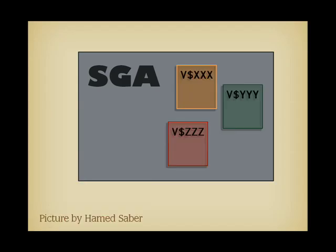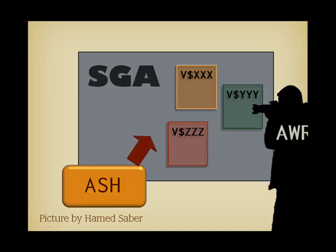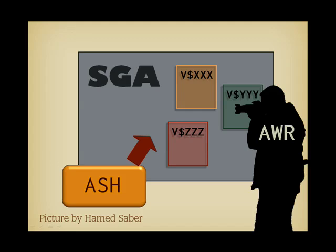With version 10, Oracle shipped an improved statspack in an offering called Performance Pack. The two major components are a new monitor called ASH for Active Session History, and a revamped statspack called AWR for Automatic Workload Repository. By default, ASH probes memory every second and only checks active sessions. Data is saved to a memory buffer and dumped to the database only once in a while. In the meantime, AWR takes statspack-style snapshots every hour by default.